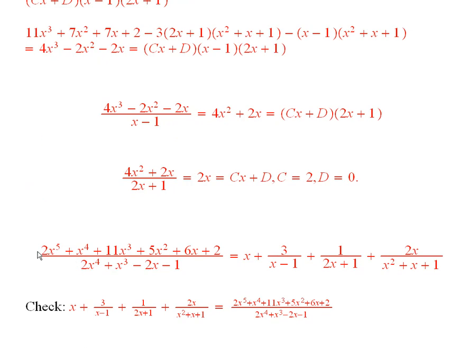So it follows that the original rational function is equal to x plus 3 over x minus 1, 1 over 2x plus 1, and 2x over this.